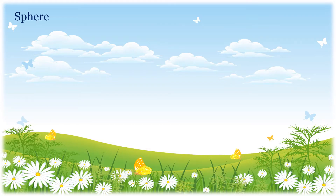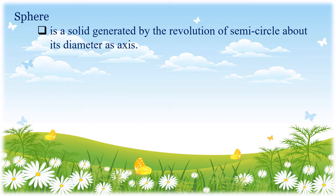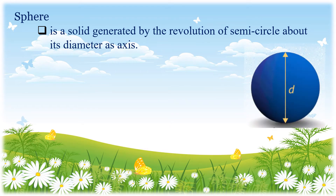What is a sphere? A sphere is a solid generated by the revolution of a semicircle about its diameter as axis. Supposing we have this sphere.